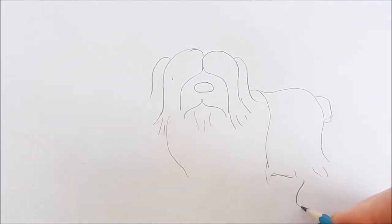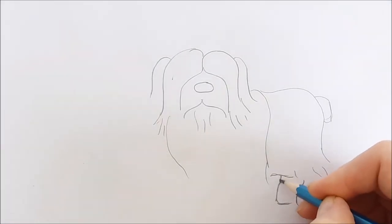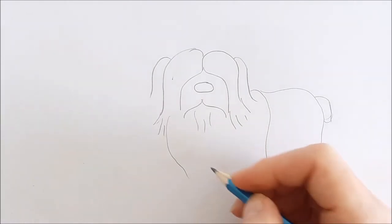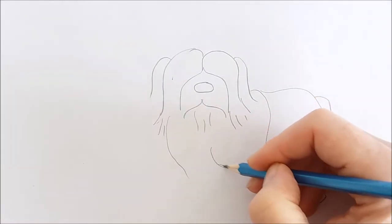There are those random lines and then I'm going to draw in a paw here and one right over here. They're just rounded feet. Not too much definition because sheepdogs have a lot of hair.